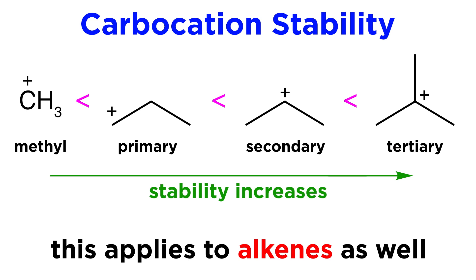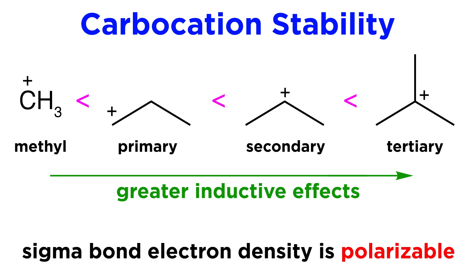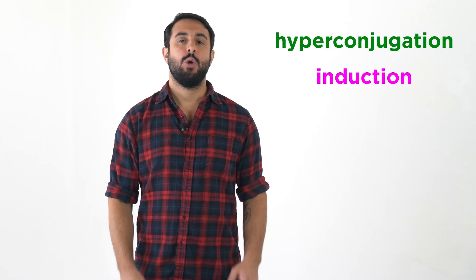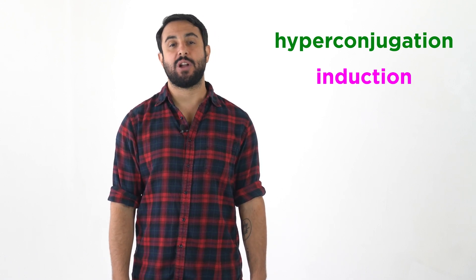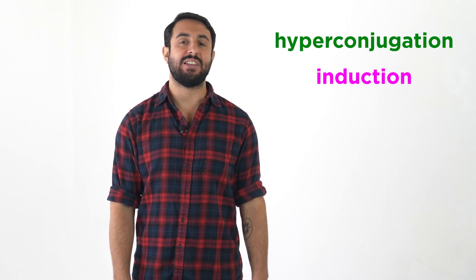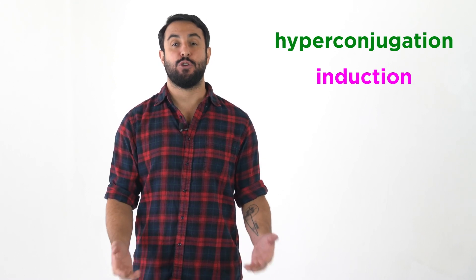This same phenomenon is also behind the stabilization of alkenes with greater substitution. Another reason for this stabilization has to do with inductive effects, which refers to electronic effects occurring through sigma bonds. The electron density surrounding alkyl groups is more polarizable through the sigma bond system than that around a hydrogen atom, so more alkyl groups result in a greater inductive effect, which is stabilizing. With that, we understand how hyperconjugation and inductive effects both contribute to the carbocation stability trend, which says that more highly substituted carbocations, meaning those with more alkyl groups, will be more stable. Professor Dave for Chegg, see you next time!